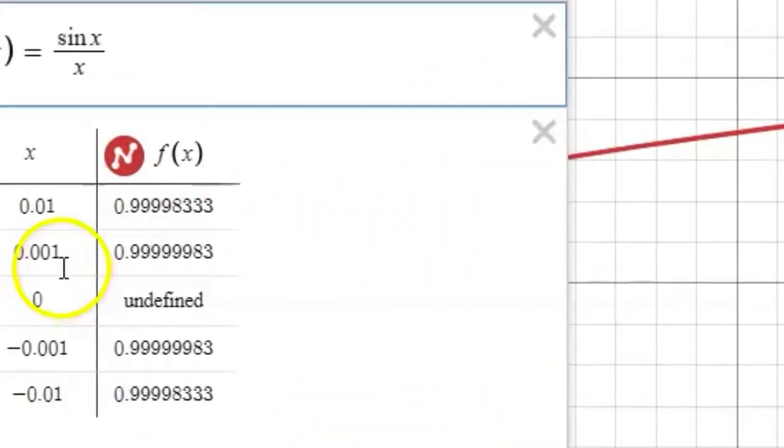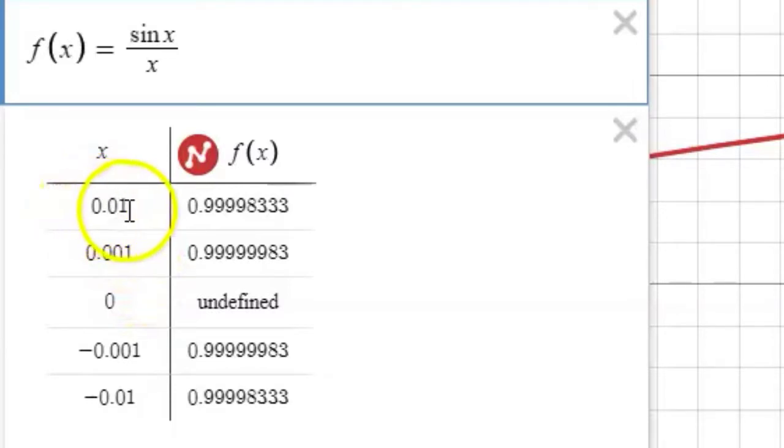Now let's look at the table of values just to further confirm. Notice for input values of 0.01 and 0.001, the outputs are really, really close to one. Likewise, on the negative side, negative 0.01 or negative 0.001, we have output values of 0.999999. So again, keep in mind that I am not showing input values that are as close to zero as one could get theoretically.